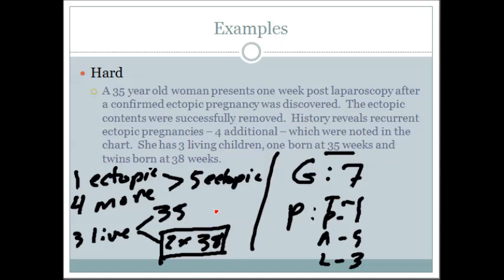This one makes you think because twins are thrown in as a curveball. You have to slow down and think: how many pregnancies does she have? It doesn't matter how many children she has — she could have a whole bunch of twins. But remember, each time she delivers a set of twins, it's only one pregnancy. Hopefully you found this video useful. If you have any questions, be sure to ask. Please subscribe for more videos, and like if you enjoyed it. Thank you.